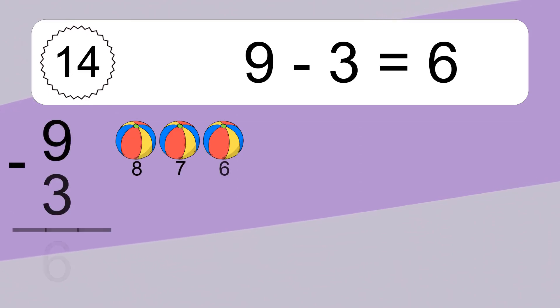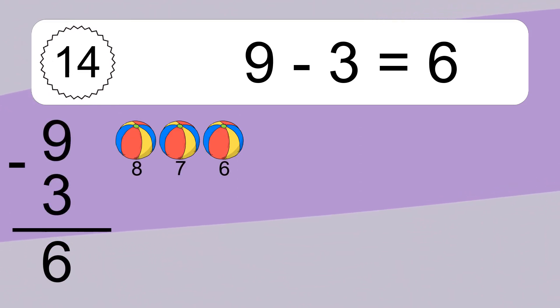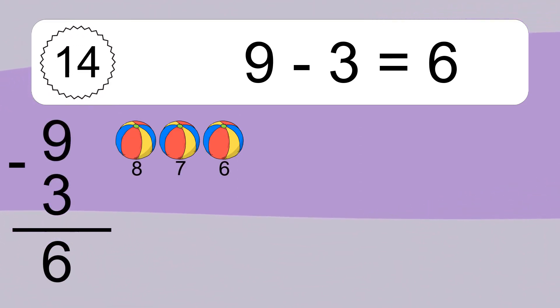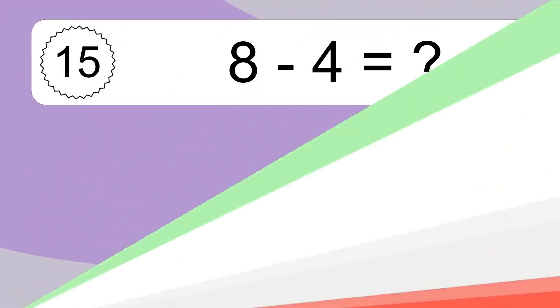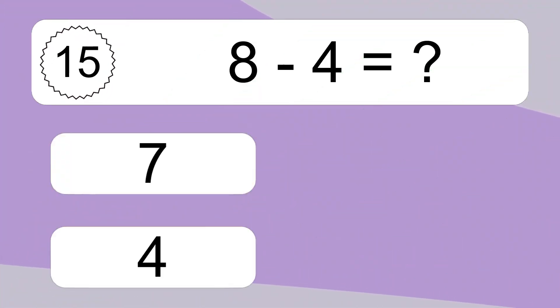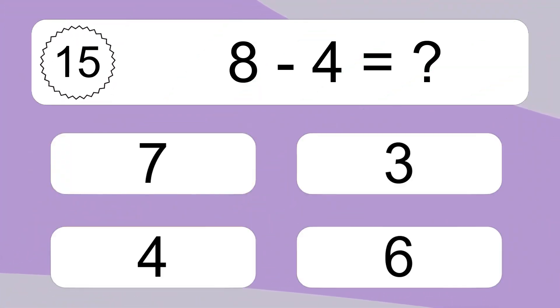9 minus 3 equals what? 9 minus 3 equals 6. Let's count it: 8, 7, 6.